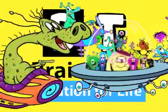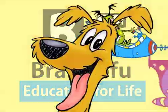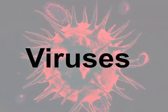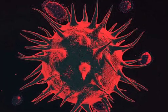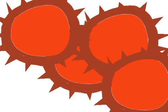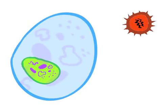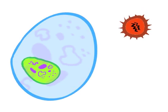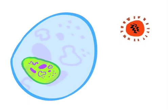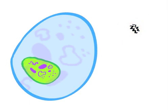Viruses attack our cells and cause disease, sometimes with fatal results. Viruses have one purpose: to multiply and destroy. When a virus enters our body, it looks for a cell to enter and attack. The cell tries to fight back by stripping the virus of its outer wall of proteins, but unfortunately this does not help.